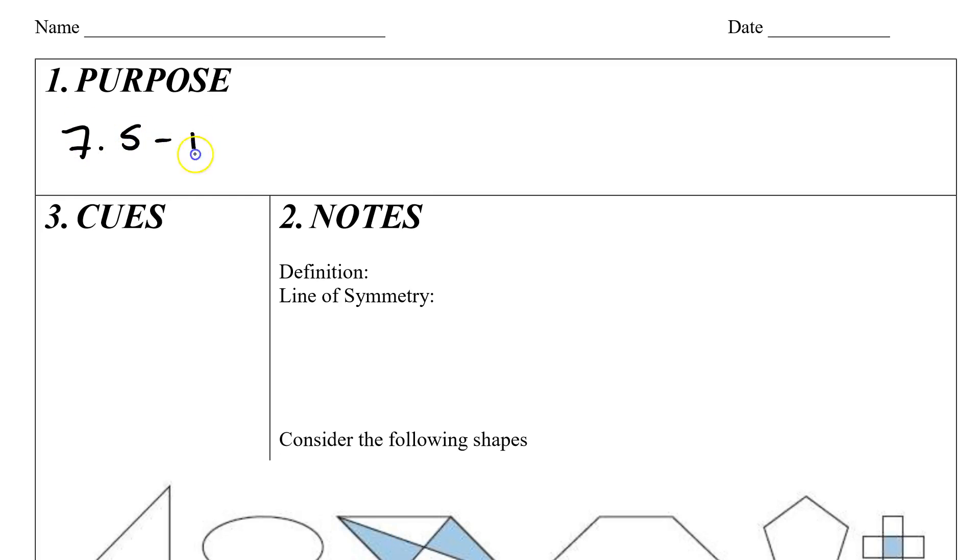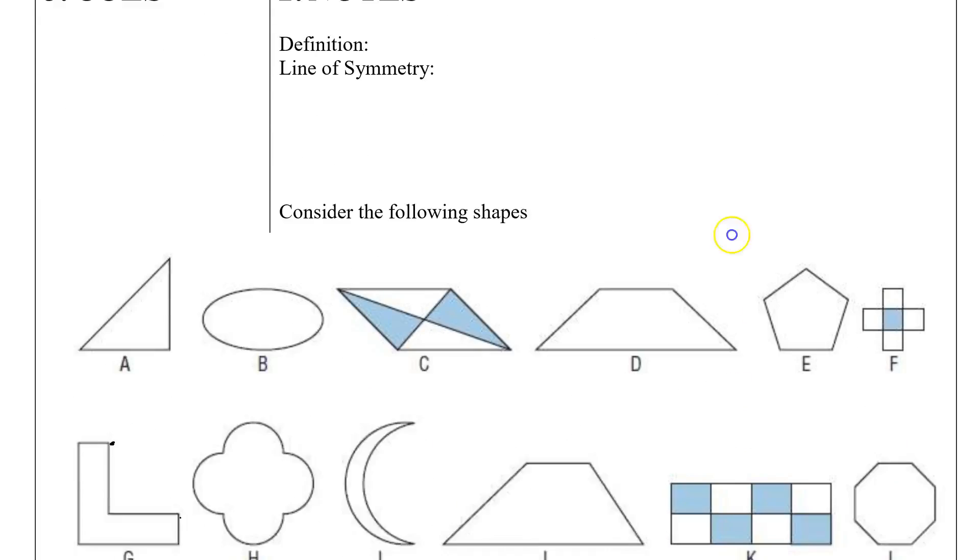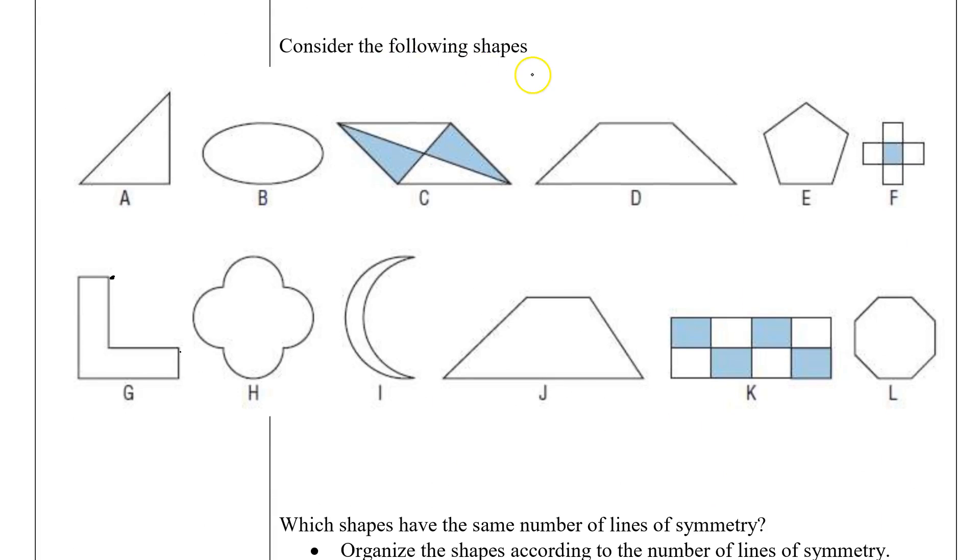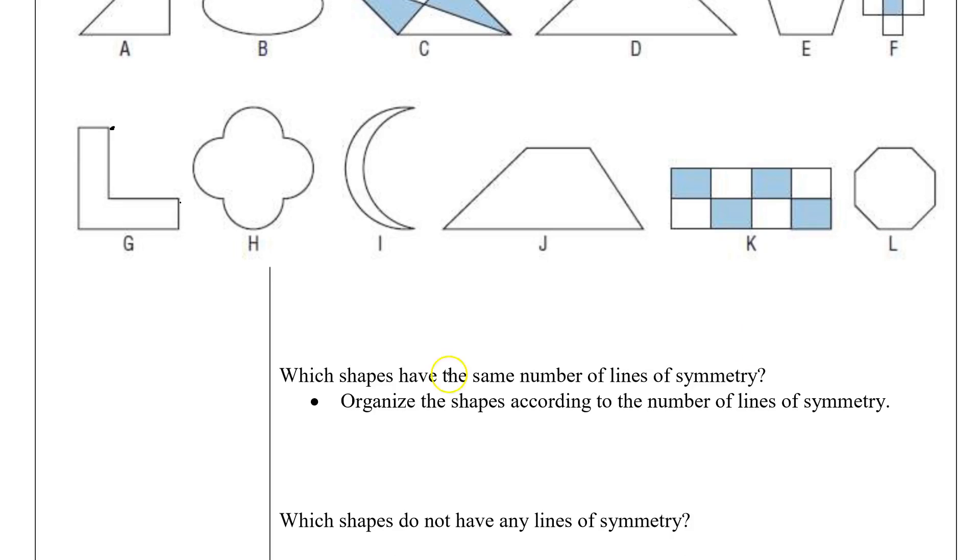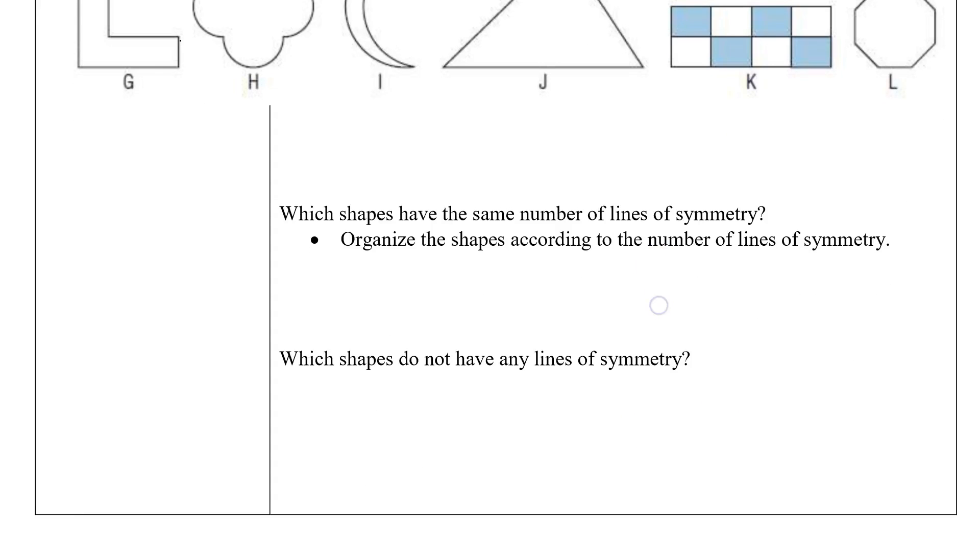7.5 Reflections and Line Symmetry. In the next activity, I want you to consider the following shapes and which shapes have the same number of lines of symmetry. Organize the shapes according to the number of lines of symmetry. Which shapes do not have lines of symmetry?